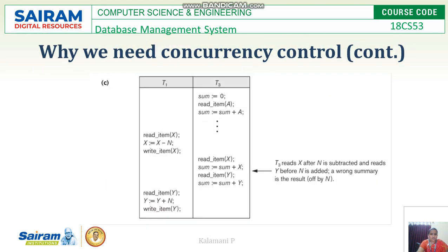In this example, the sum is calculated as sum plus A, then item X is read. Transaction T3 reads X after N is subtracted and reads Y before N is added, so the wrong summary is obtained. This is a problem we face many times in real life.